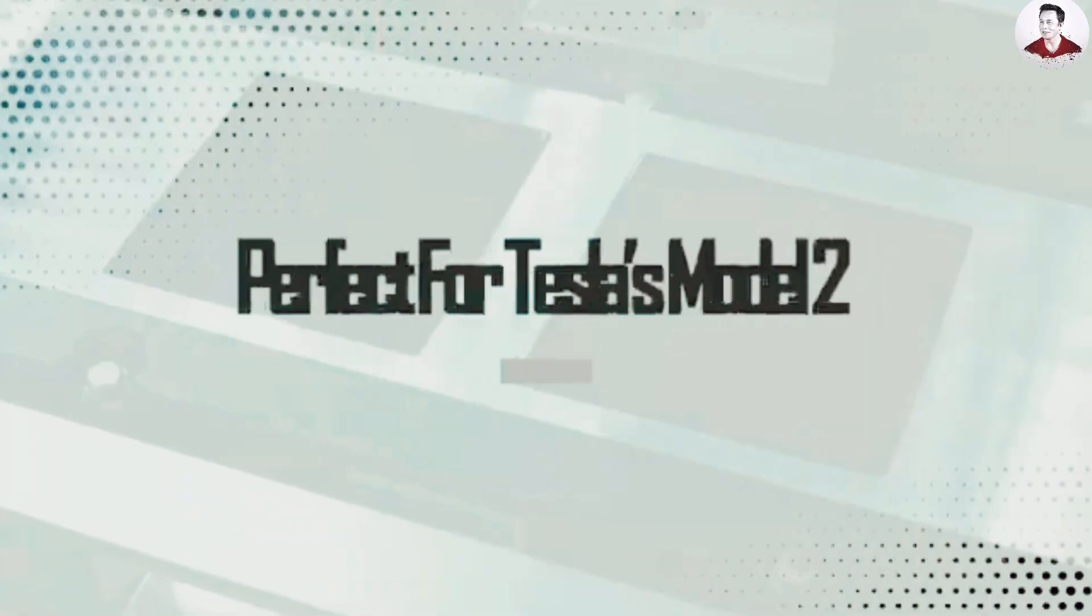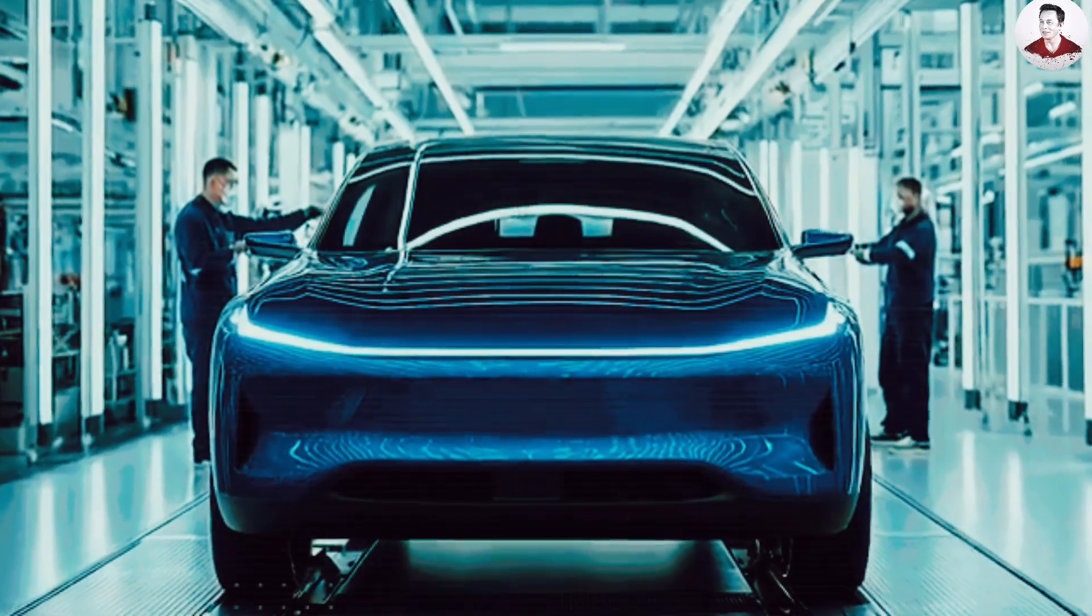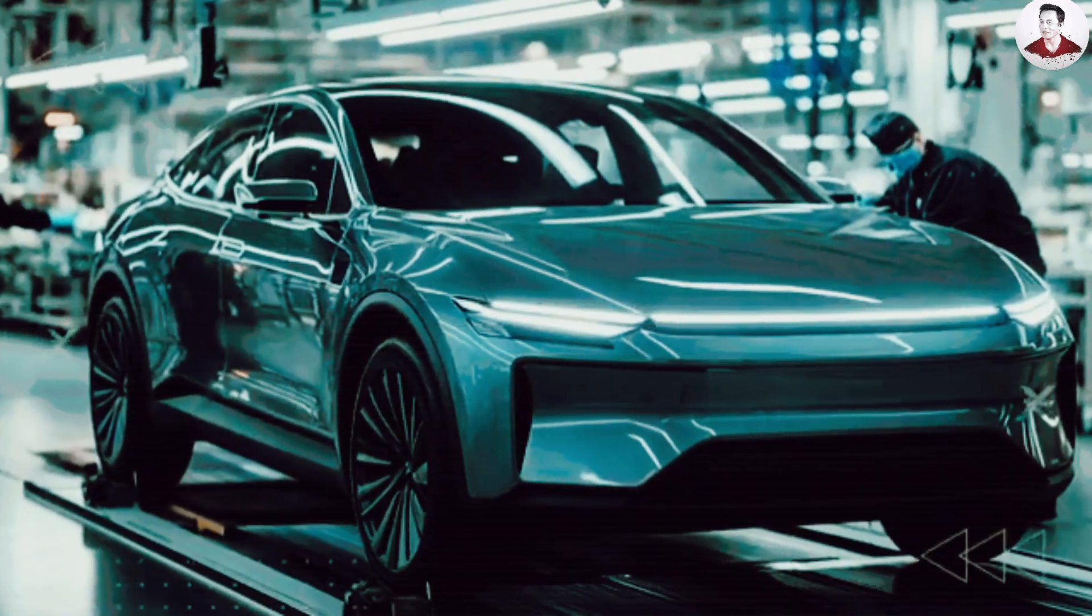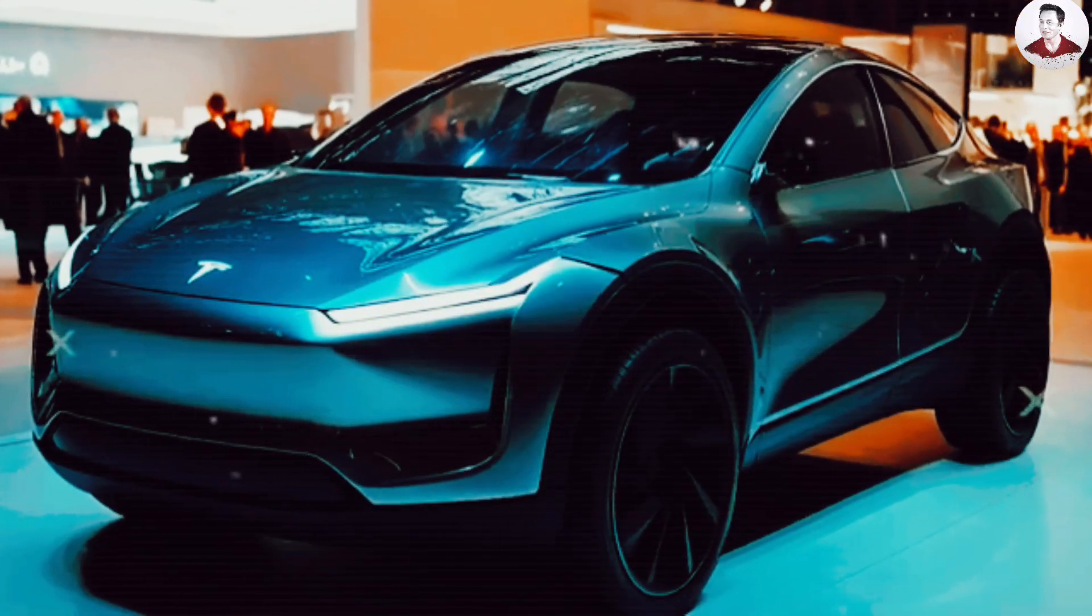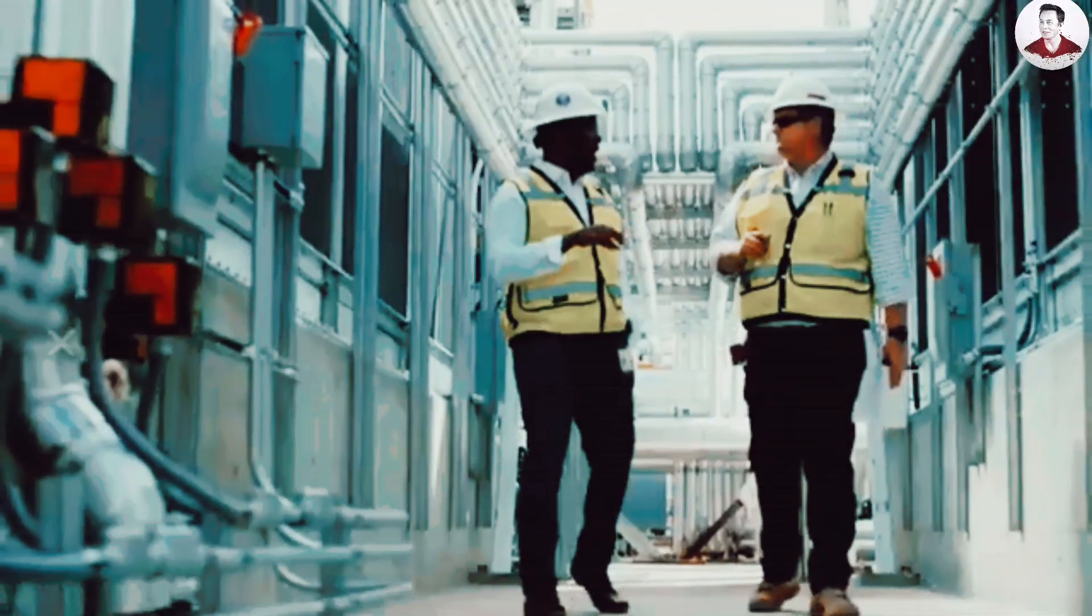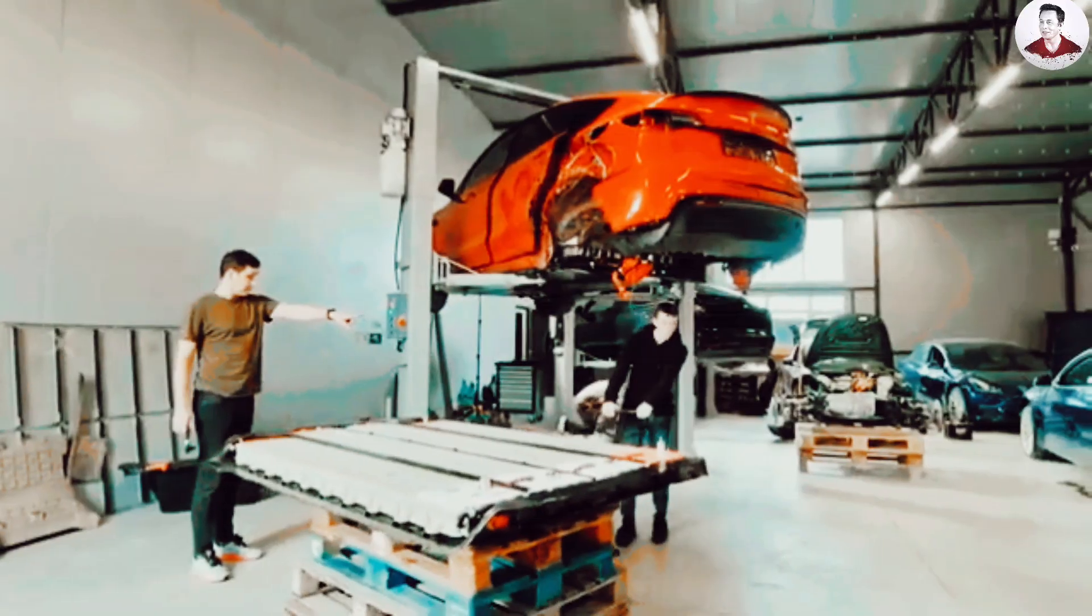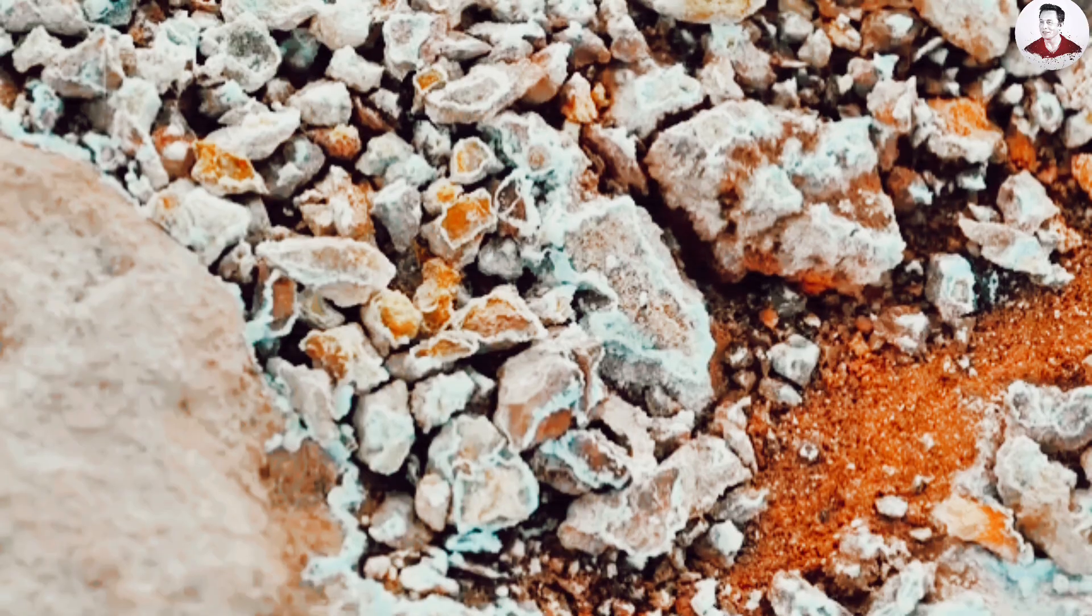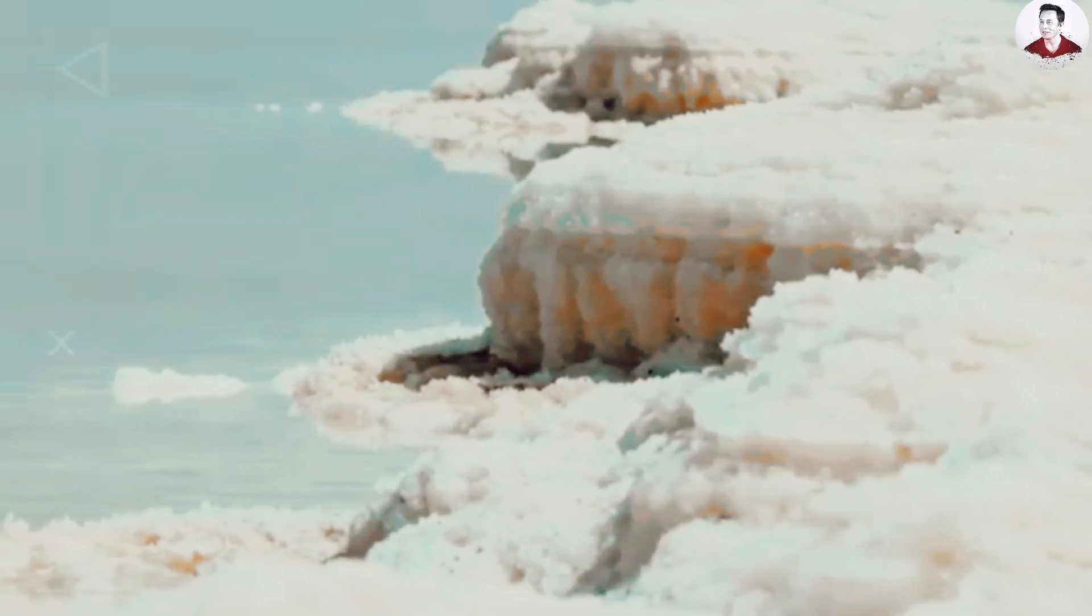Why sodium sulfur is ideal for Tesla's Model 2? Tesla's upcoming Model 2 aims to be a budget-friendly, high-performance EV that appeals to the masses. And the key to pulling this off? Reducing dependency on expensive, volatile lithium battery components. Enter sodium sulfur batteries, a perfect fit for the Model 2. These cells use cheap, abundant materials like salt and sulfur. Countries like Australia, a strong U.S. ally, are rich in both, allowing Tesla to sidestep trade risks and avoid tariffs.